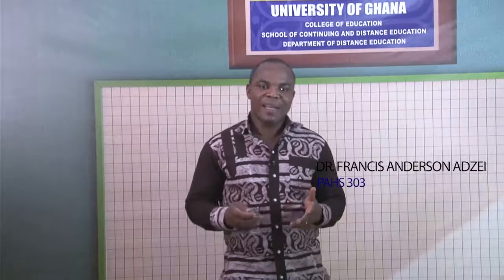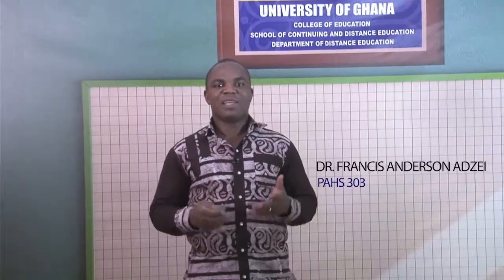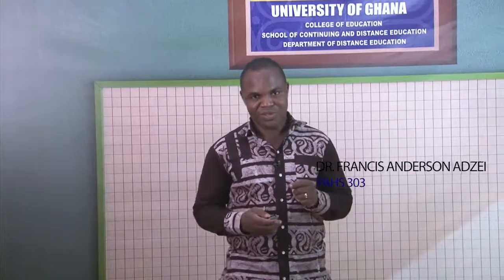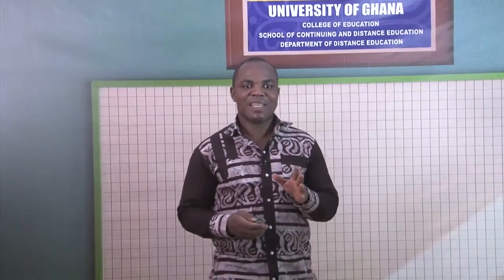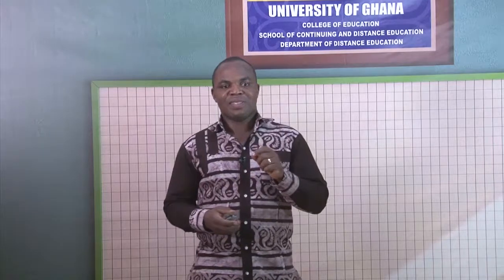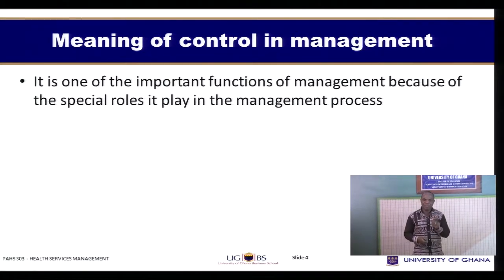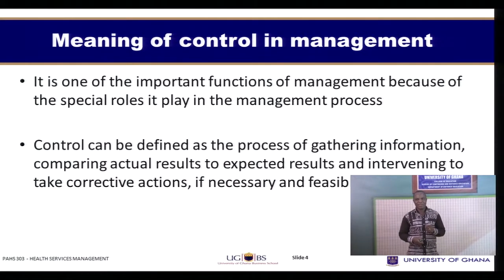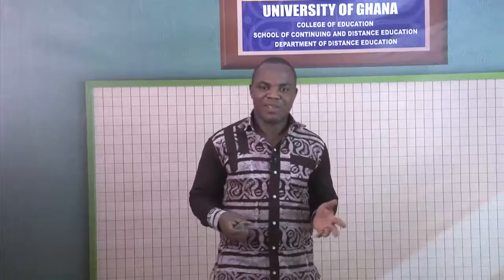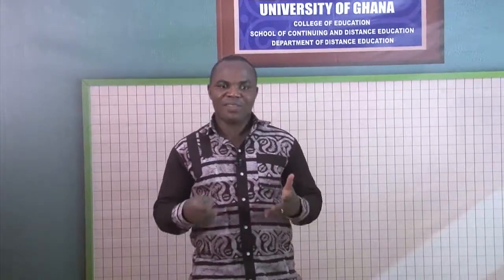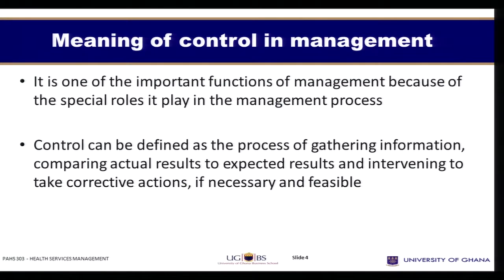You remember when we were learning about managerial functions, we understood one of the managerial functions to mean control. What is this control? Control basically is about the processes by which we compare standards with results. It is one of the most important functions because of the special role it plays in the management process. It is a process where we gather information, compare actual results with expected results, and then put in interventions or corrective actions if there is any variance between what we expect and what we have received.